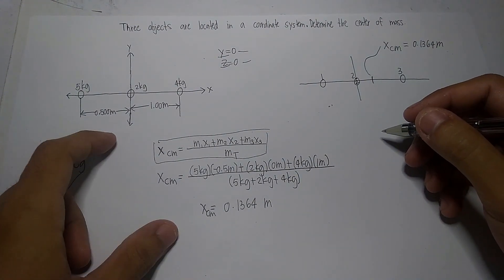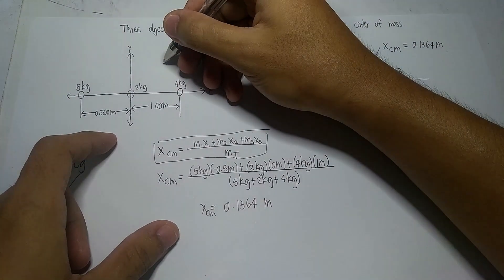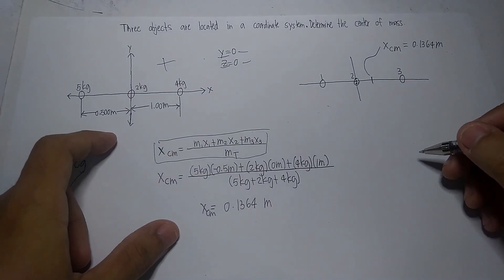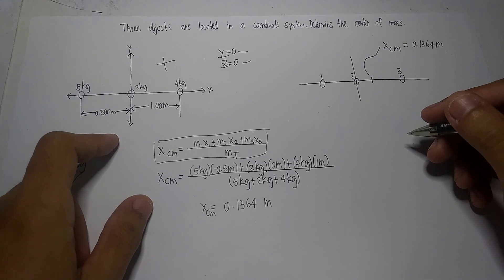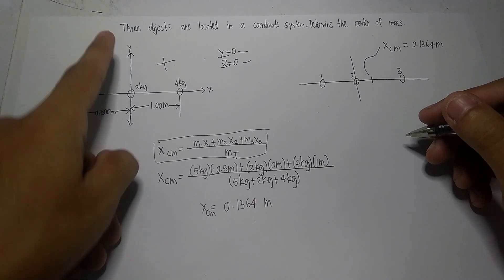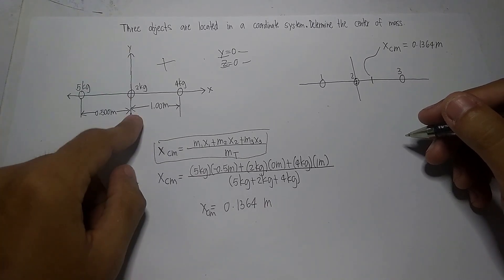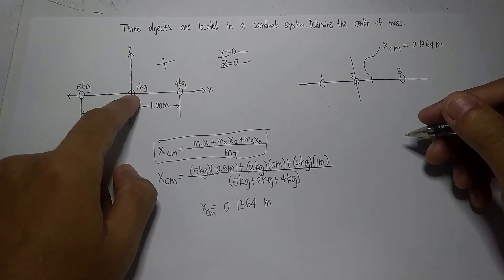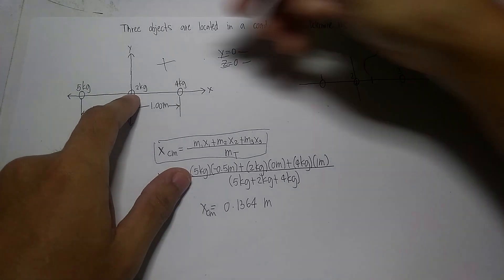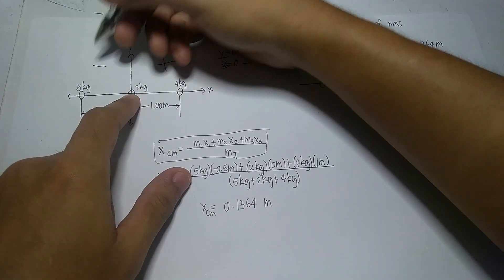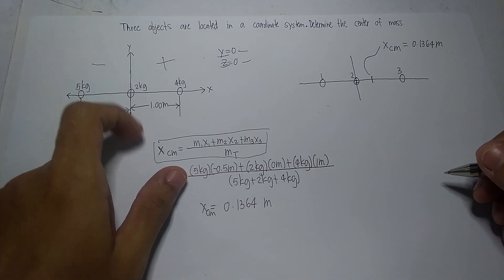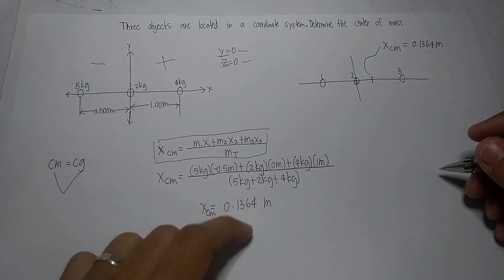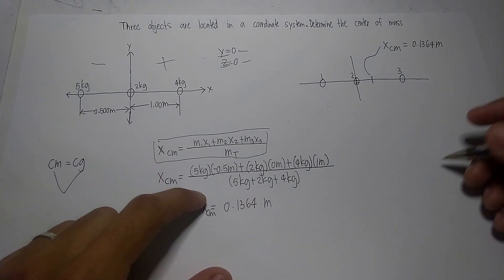We should also take note that we will denote the first quadrant as the positive side because there's no given reference point. Therefore, we can freely choose our reference point and in this case, we will choose the y-axis as the reference point. Therefore, the other side will become negative in value. The quadrant one will be the positive value. So now we will start to solve this problem.